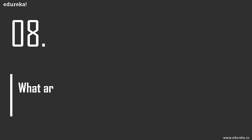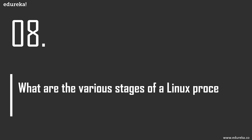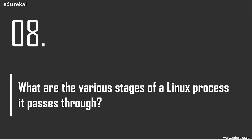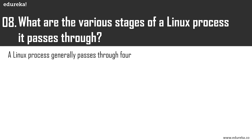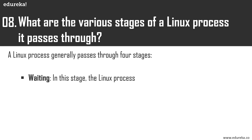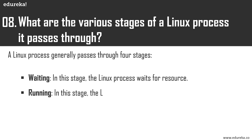What are the various stages of a Linux process? Basically there are four stages: waiting, running, stopped, and zombie mode. Waiting is when the Linux process waits for a resource. Running means the process is being executed. After successful execution, the process is set to stopped.